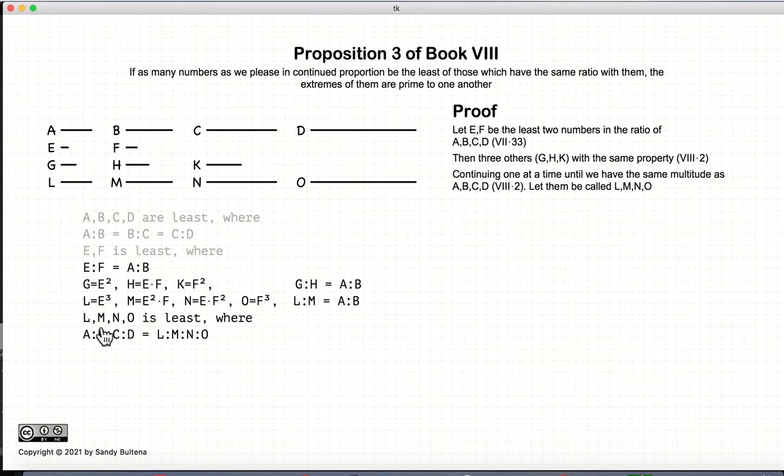And we have that L, M, N, and O are the least numbers where L, M, N, O is in the ratio of E to F, which is also the ratio of A to B. So we have established that these two series have the same ratios.